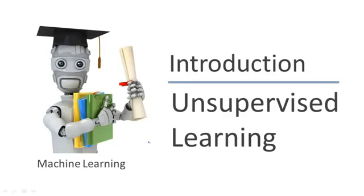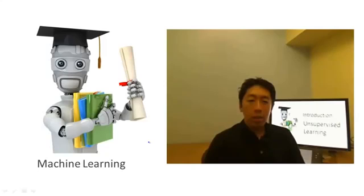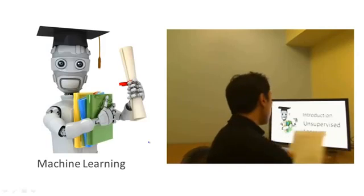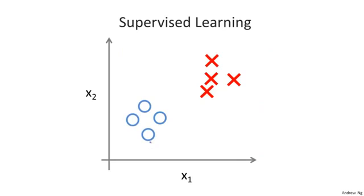In this video, we'll talk about the second major type of machine learning problem called unsupervised learning. In the last video, we talked about supervised learning. Back then, we got data sets that look like this, where each example was labeled either as a positive or negative example, whether it was a benign or malignant tumor. So for each example in supervised learning, we were told explicitly what is the so-called right answer, whether it's benign or malignant.